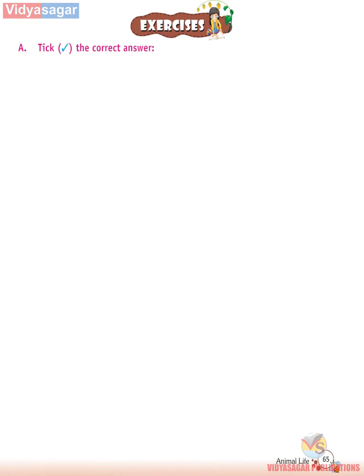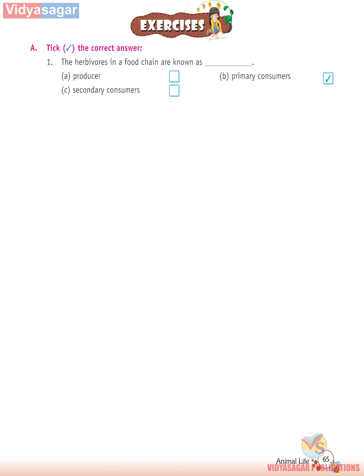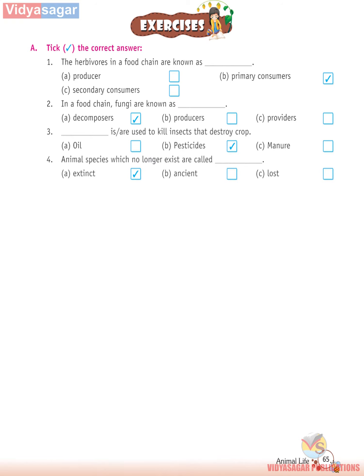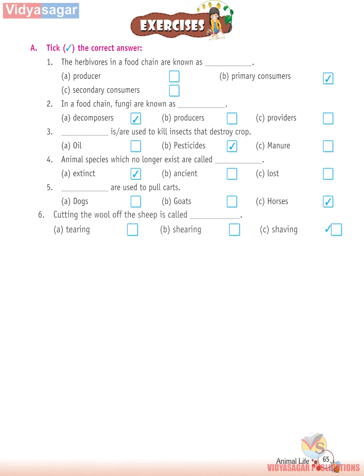Exercises A — Choose the correct answer: 1. The herbivores in a food chain are known as primary consumers. 2. In a food chain, fungi are known as decomposers. 3. Pesticides are used to kill insects that destroy crops. 4. Animal species which no longer exist are called extinct. 5. Horses are used to pull carts. 6. Cutting the wool off the sheep is called shearing.